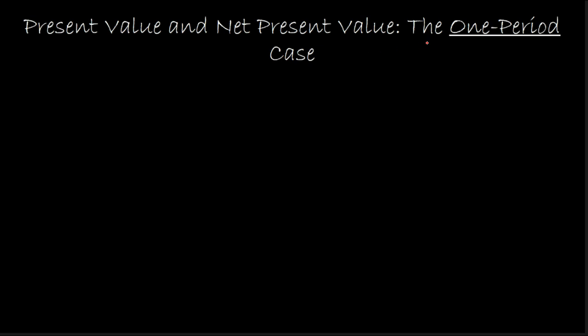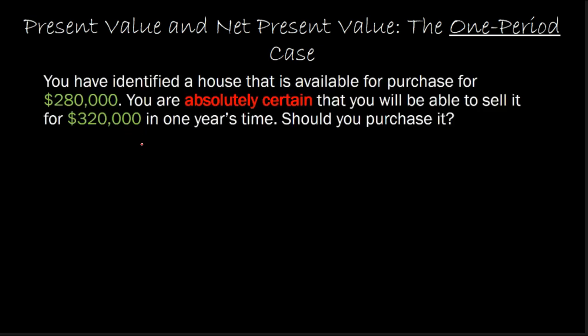We are going to continue to consider the situation where we're still dealing with a one-period case. Let me try and explain that using an example. Suppose that you have identified a house that is available for purchase for $280,000 today. And suppose that you've spoken with your real estate agent and your real estate agent is absolutely certain that you will be able to sell this house for $320,000 one year from now. So the question is, should you purchase this house?